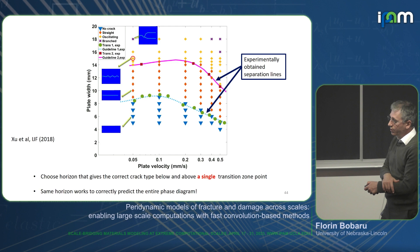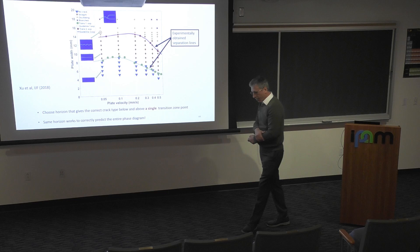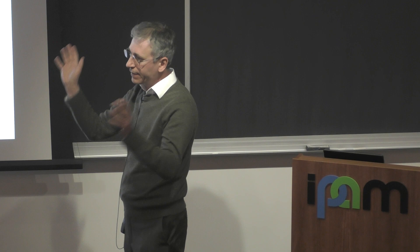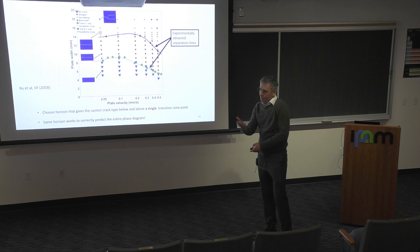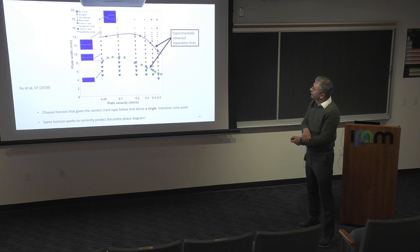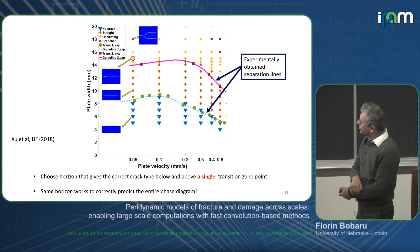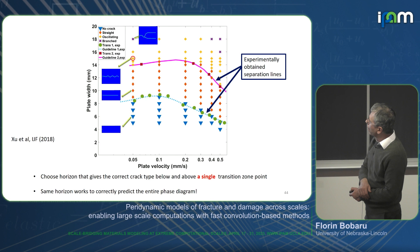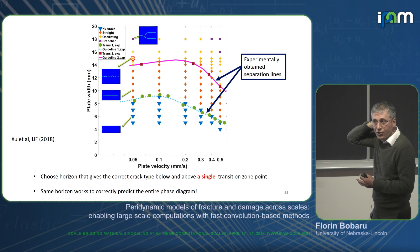These are the experimental separation lines, and we ran about 100 simulations with different plate velocities and plate widths. Where we got an oscillating crack we put a cross, straight crack a diamond, and no crack growth an inverted triangle. They lie almost on top of the experimental separation lines — so this is really a predictive model for this behavior in full detail.